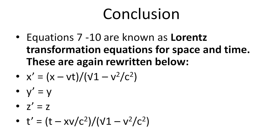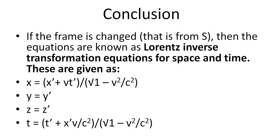Equations 7 to 10 are together known as the Lorentz transformation equations for space and time. These are rewritten as: x' equals (x minus vt) divided by the square root of (1 minus v²/c²); y' equals y; z' equals z; and t' equals (t minus xv/c²) divided by the square root of (1 minus v²/c²).